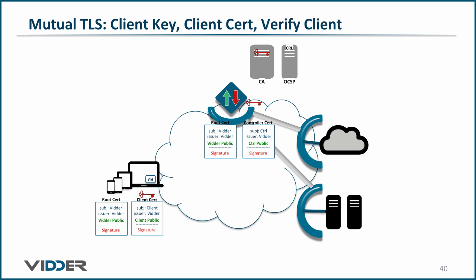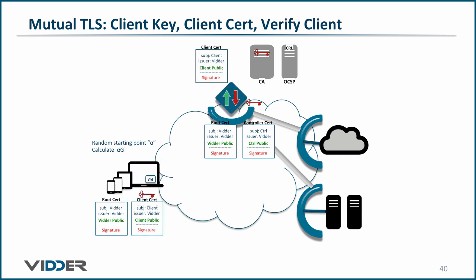Continuing with the handshake, the client must generate its random starting point on the elliptic curve, alpha, and apply it to the generator G. Then, it sends its certificate to the controller and sends up its Diffie-Hellman composite number. However, the next thing it does is kind of interesting. It takes all the text that has been sent and received, providing a good deal of randomness, and hashes it, and encrypts it with its private key, and sends it to the controller.